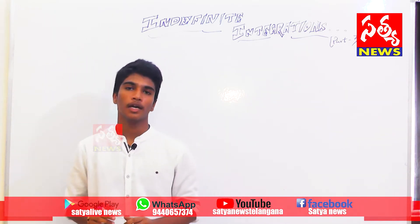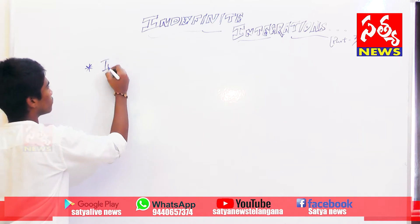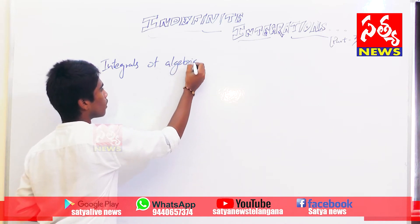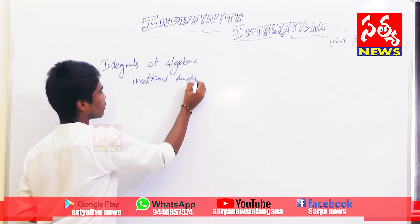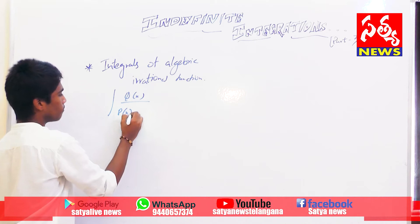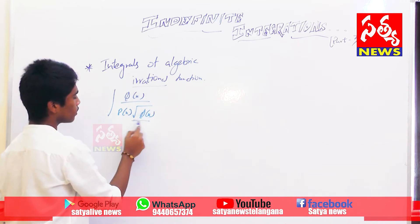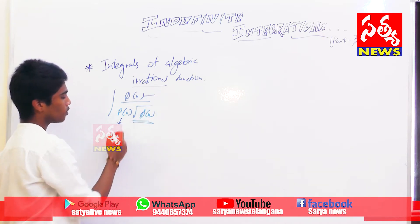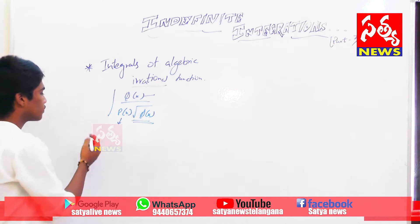Our next topic is integrals of algebraic irrational functions. These types of functions cannot be integrated easily. They are of the form: integration of q(x) divided by p(x) times the square root of q(x). Here p(x) and q(x) are two different kinds of functions, and there are four methods to solve them.